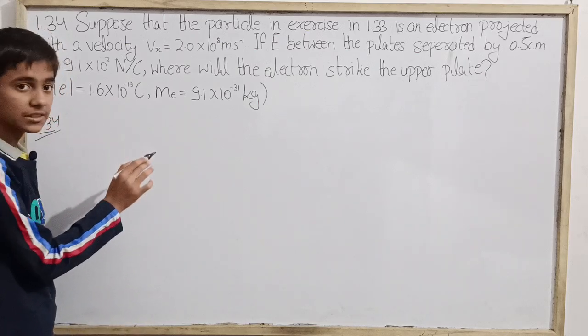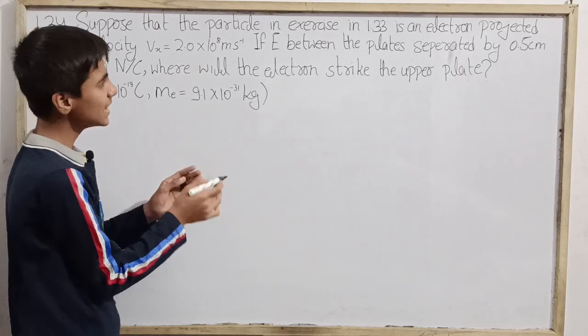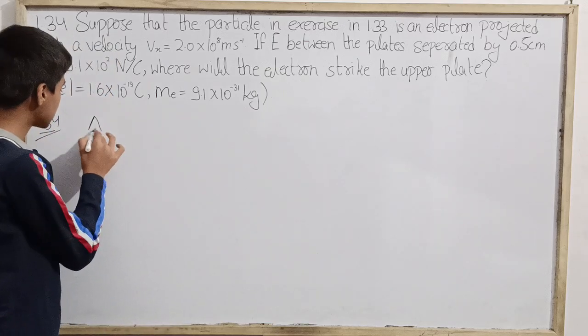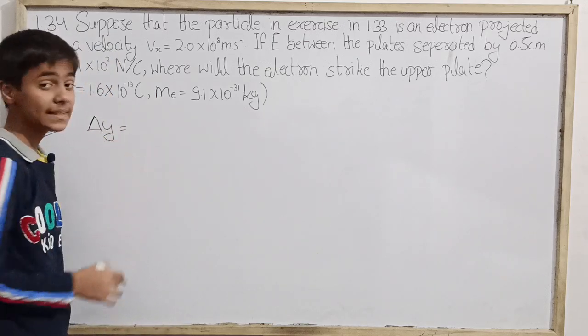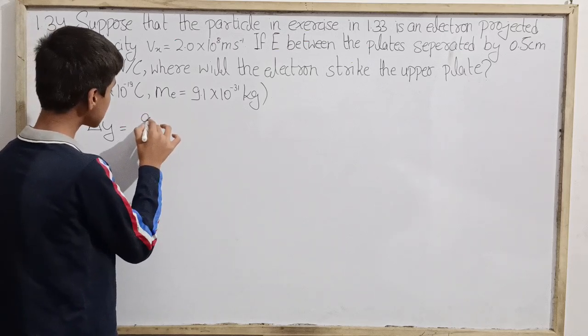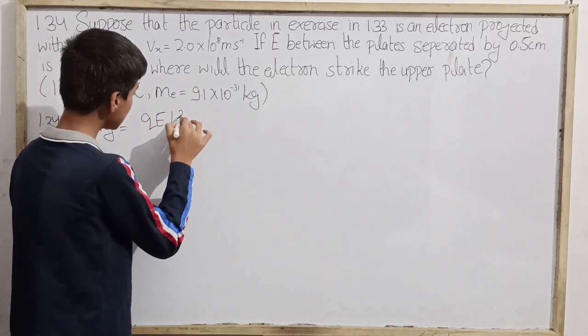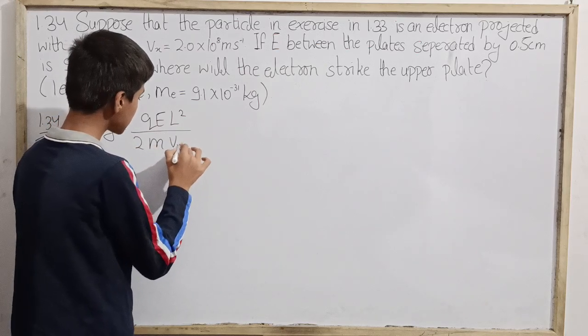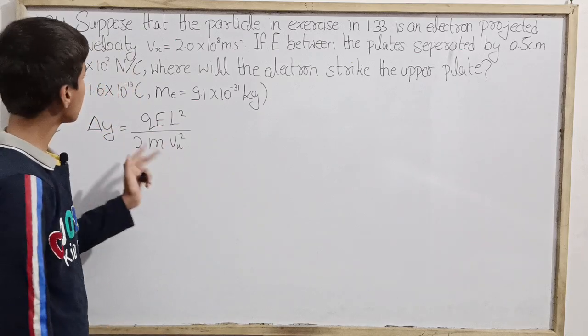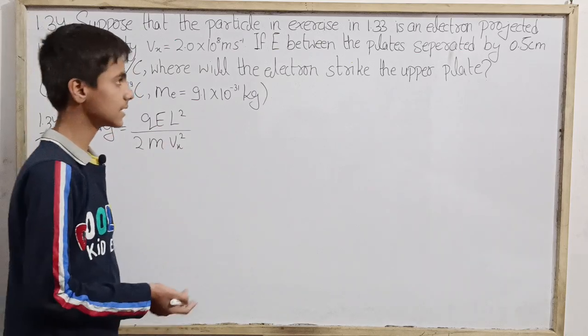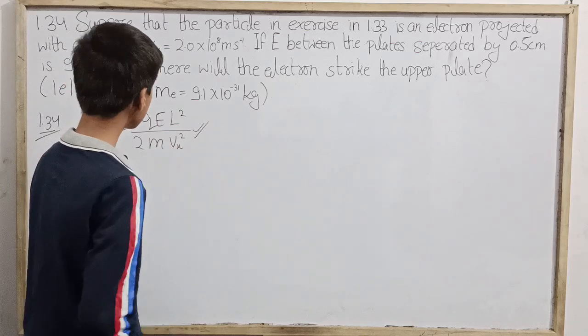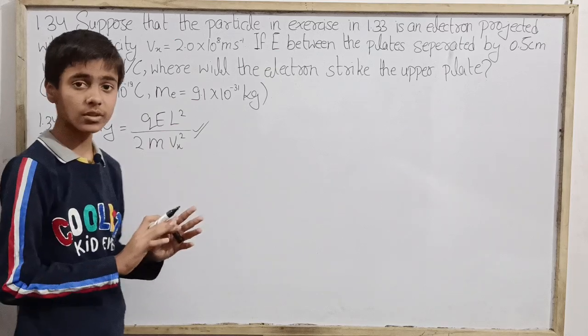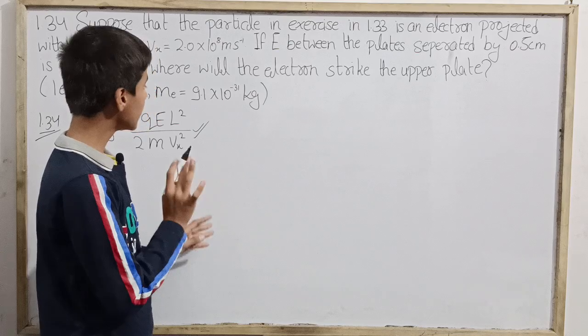This goes to Exercise 1.33 where there is a negative charge particle which is going in a constant electric field and it deflects. The amount of deflection, which is denoted by delta y, this was q*e*l^2 over 2*m*vx^2, where vx is the initial horizontal velocity. This formula we need to apply right in this situation. The only difference is that the formula we proved, we showed, this will hold, we just have to apply it here.